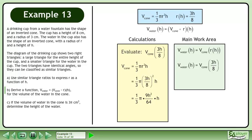Square 3h over 8 to get 9h squared over 64. Simplify to get 3 over 64 pi h cubed. The composite function is v of h equals 3 over 64 pi h cubed.